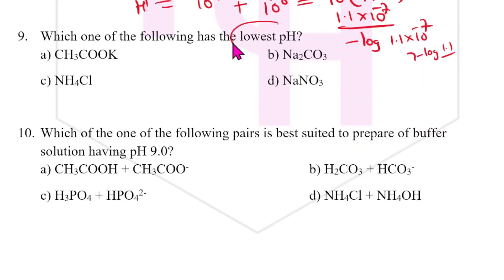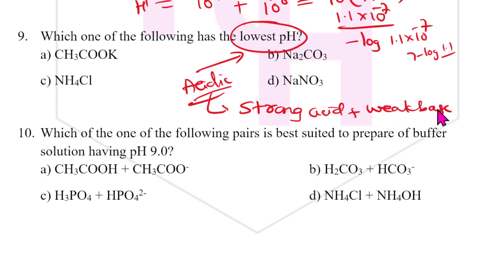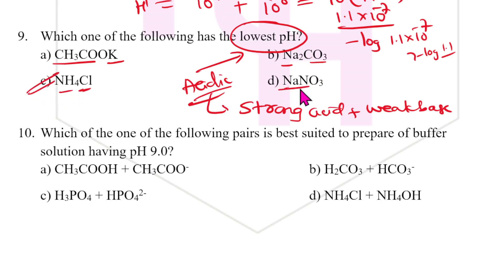Which one of the following has the lowest pH? Lowest pH means most acidic. The salt made up of a strong acid and a weak base gives an acidic solution. Strong acid plus weak base gives pH less than 7. The answer is C.